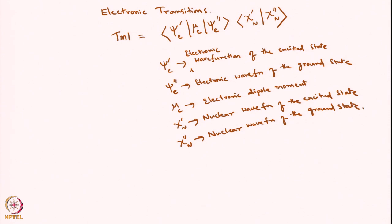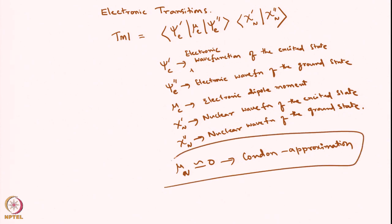To arrive at this TMI, we assume that the nuclear dipole moment μ_0(nuclear) ≈ 0. This is the Condon approximation, which states that the nuclear dipole moment does not significantly change with respect to the electronic coordinates.